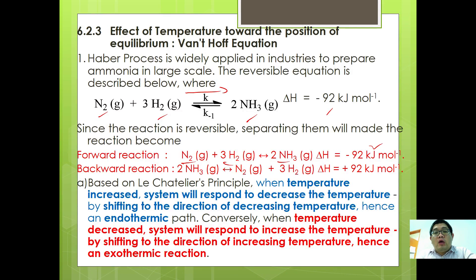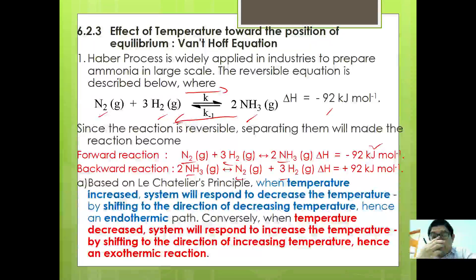This reaction can also be looked at from the angle of the backward reaction. In the backward reaction, 2NH3 gives N2 plus 3H2. Since the forward reaction is exothermic, the backward reaction is endothermic, giving a net positive 92 kilojoules per mole.